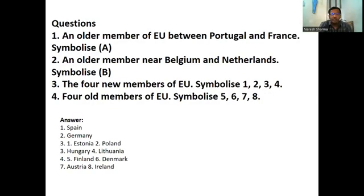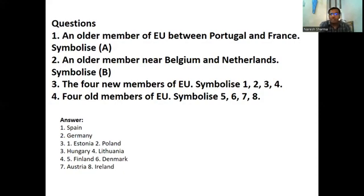The third question: the four new members of the European Union are symbols 1, 2, 3, 4, and the four older members are symbols 5, 6, 7, 8. The answers for the new members are Estonia, Poland, Hungary and Lithuania. And the four older members are Finland, Denmark, Austria and Ireland.